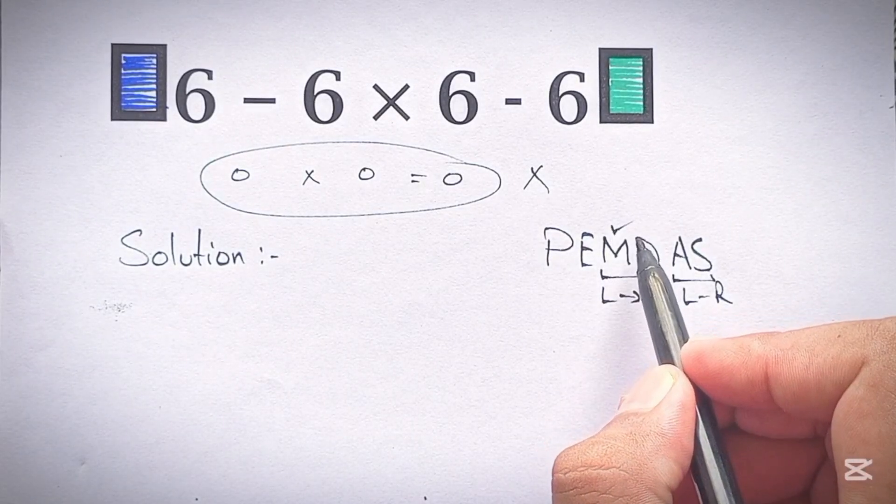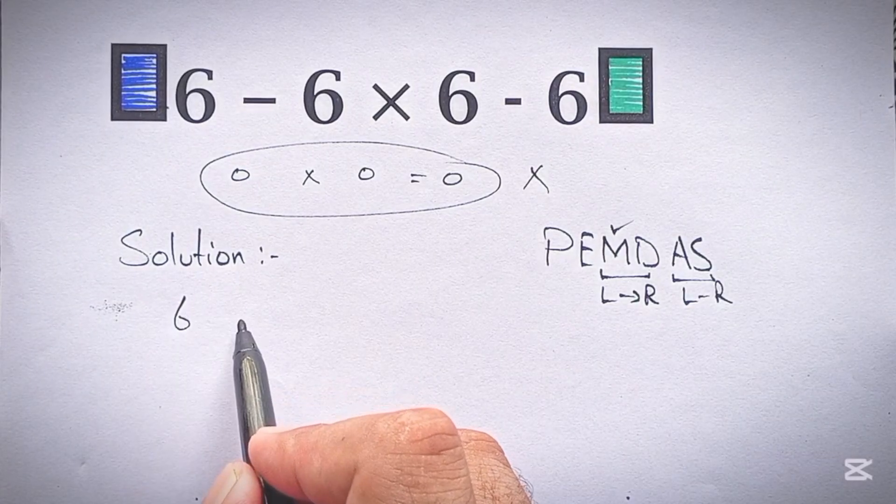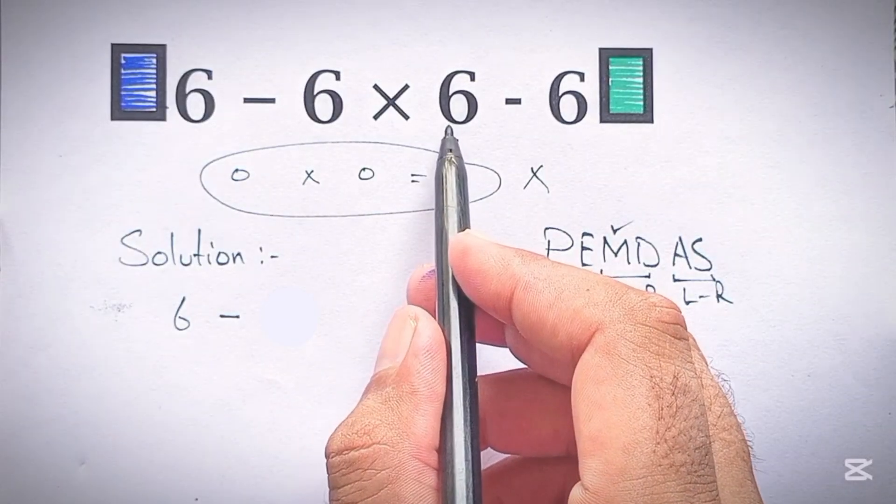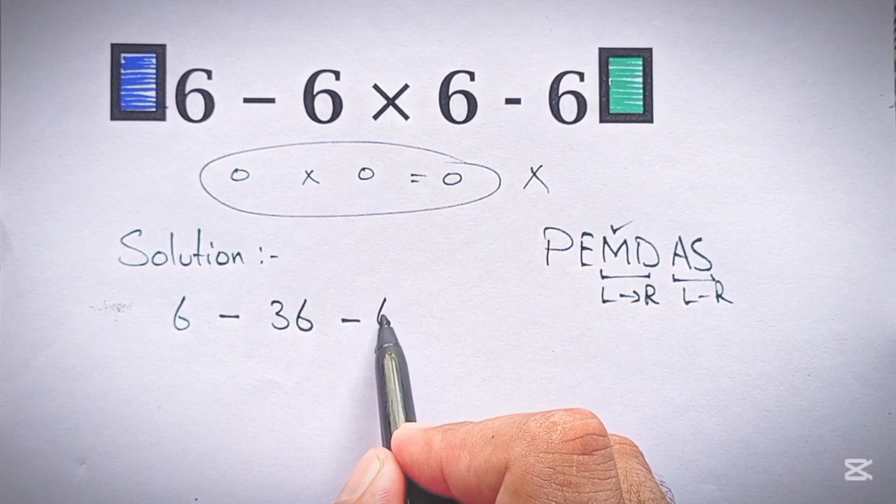So here we first do multiplication, then subtraction. So the solution for this problem is as follows: 6 times 6 gives us 36, and again minus 6.